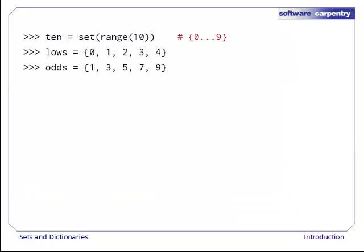To show you what we can do with sets, let's create three holding the integers 0 through 9, the first half of that same range of numbers, i.e. 0 through 4, and the odd values 1, 3, 5, 7, and 9. Notice that in the first case, the function range is returning a list of 10 integers, which is passed directly into set to create the set that we want.